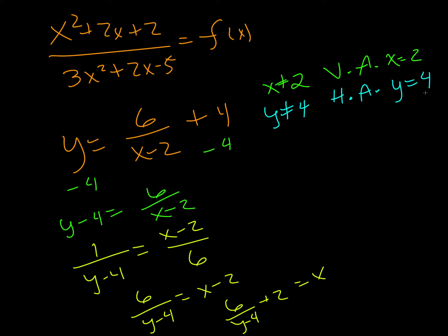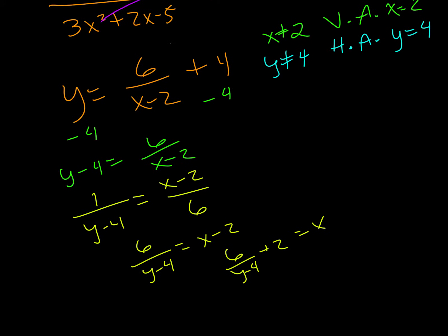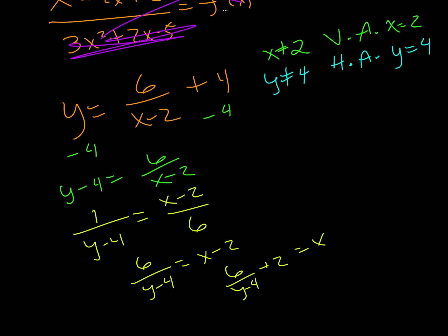Now we want to find the axis intercepts. To do that, we just plug in 0 for each of x or y. So in the orange function right here, if we plug in 0 for x and simplify it, that will give us a y-intercept. In this yellow function down here, if we plug in 0 for y, that will give us our x-intercept.